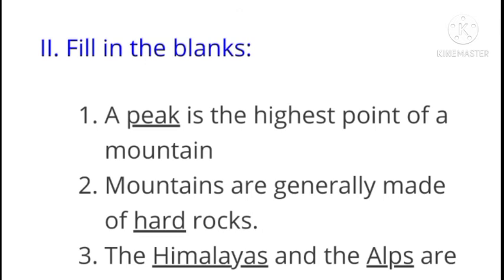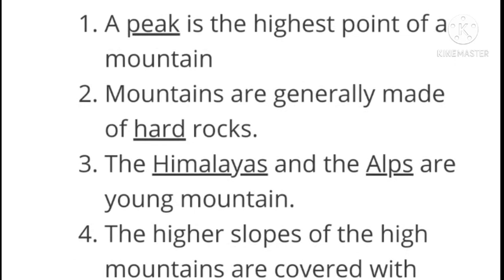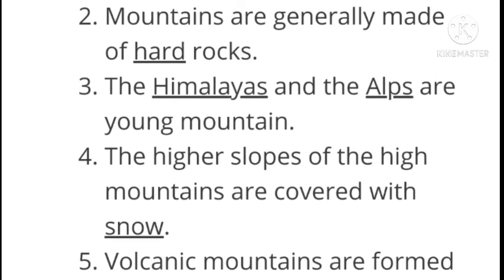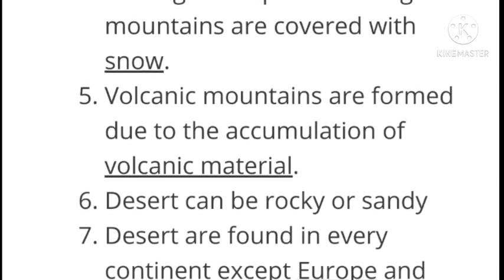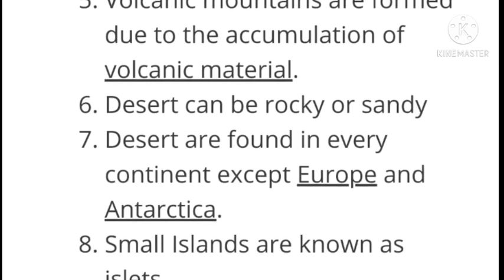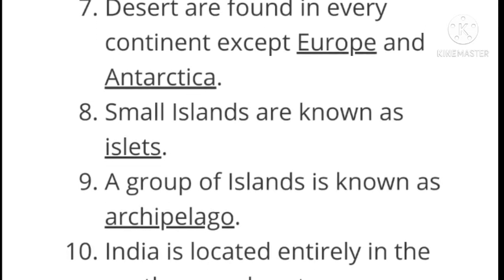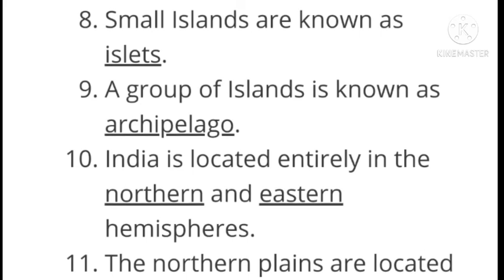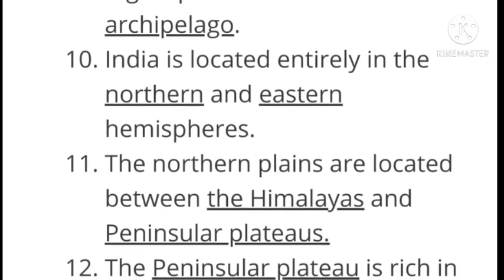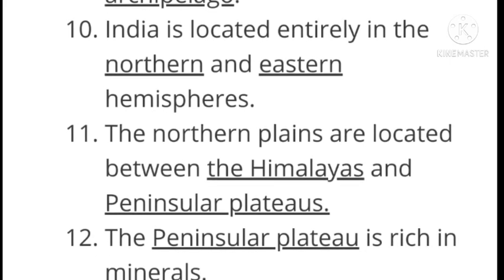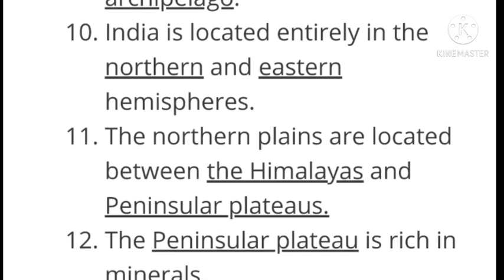Fill in the blanks: A peak is the highest point of a mountain. Mountains are generally made of hard rocks. The Himalayas and Alps are young mountains. The higher slopes of high mountains are covered with snow. Volcanic mountains are formed due to the accumulation of volcanic material. Deserts can be rocky or sandy. Deserts are found in every continent except Europe and Antarctica. Small islands are known as islets. A group of islands is known as an archipelago. India is located entirely in the northern and eastern hemisphere. The northern plains are located between the Himalayas and the peninsular plateau. The peninsular plateau is rich in minerals.